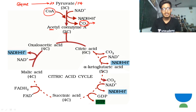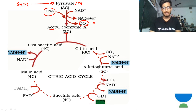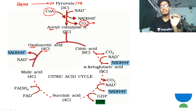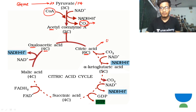Acetyl coenzyme A makes its entry into the Kreb cycle. The key thing to observe is how many carbons are present in each compound. Oxaloacetic acid is the starting material - it is a 4-carbon compound. When this 4-carbon compound merges with the 2-carbon acetyl coenzyme A, the resultant product is 4 plus 2 equals 6 carbons - so citric acid is formed, which is a 6-carbon compound. Citric acid is the first product formed - that's why the cycle is called the citric acid cycle.